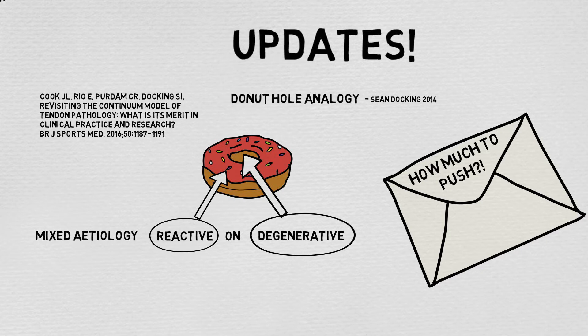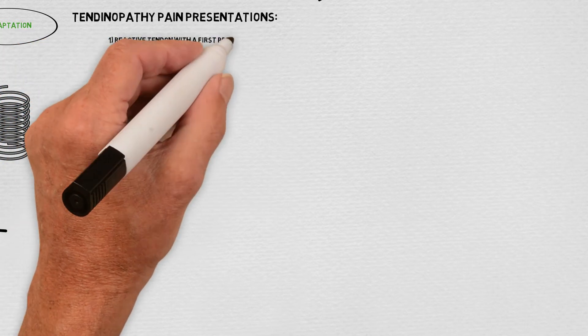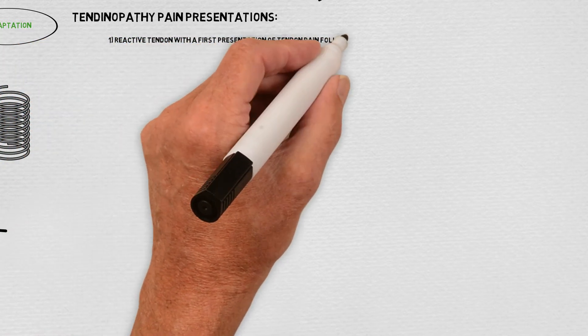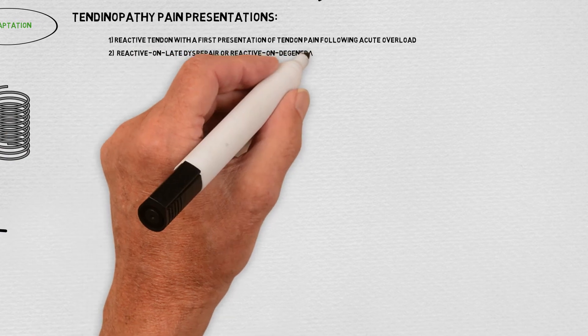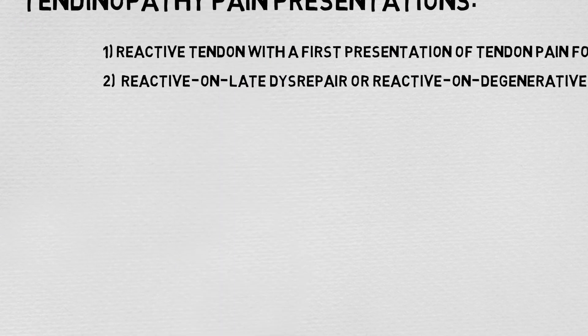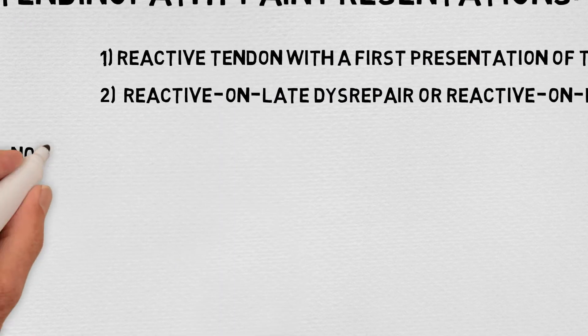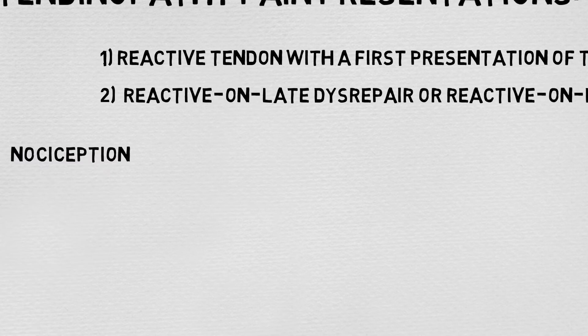The update further discusses pain mechanisms in tendons, highlighting two presentations of pain. One: a reactive tendon with a first presentation of tendon pain following acute overload. Two: a reactive on late disrepair or reactive on degenerative tendon pathology. Both of these suggest a nociceptive driver of pain, but the mechanism is still unknown.